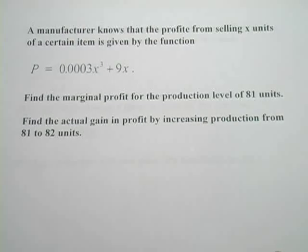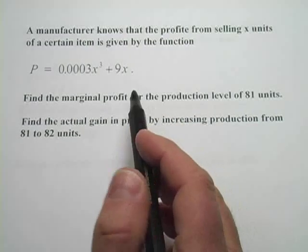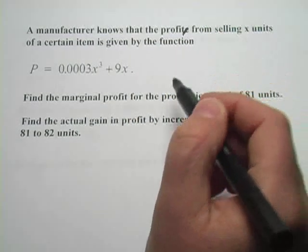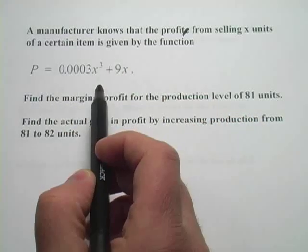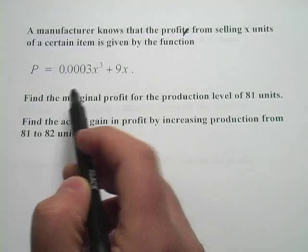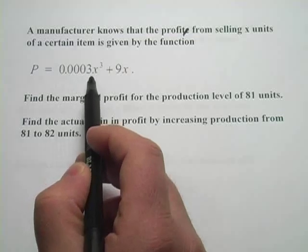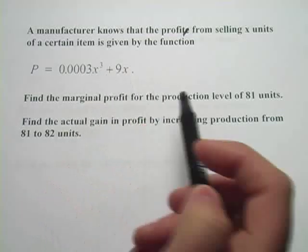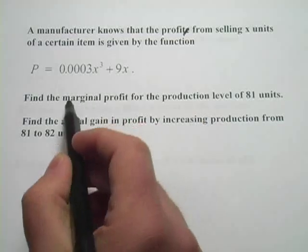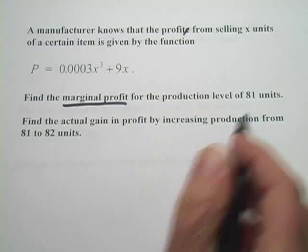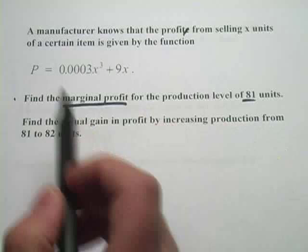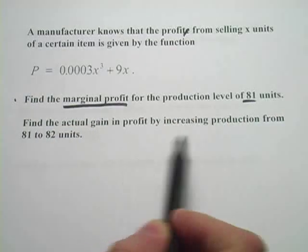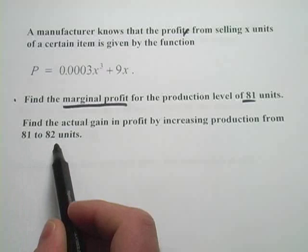So this one says that a manufacturer knows that the profit from selling x units of a certain item is given by this function. So here's our profit function. We don't have to figure it out. It's 0.0003 times x cubed plus 9x. And we want to find the marginal profit for a production level of 81 units. That's the first part. And then find the actual gain in profit by increasing production from 81 to 82 units.